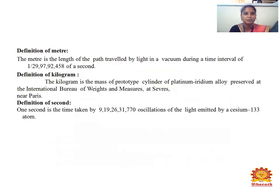What is the definition of meter? The meter is the length of the path traveled by light in a vacuum during a time interval of 1 divided by 299,792,458 seconds. Definition of kilogram: the kilogram is the mass of a prototype cylinder of platinum-iridium alloy preserved at the International Bureau of Weights and Measures at Sèvres, near Paris. What is the definition of second? One second is the time taken corresponding to 9,192,631,770 oscillations of the radiation emitted by the cesium-133 atom.